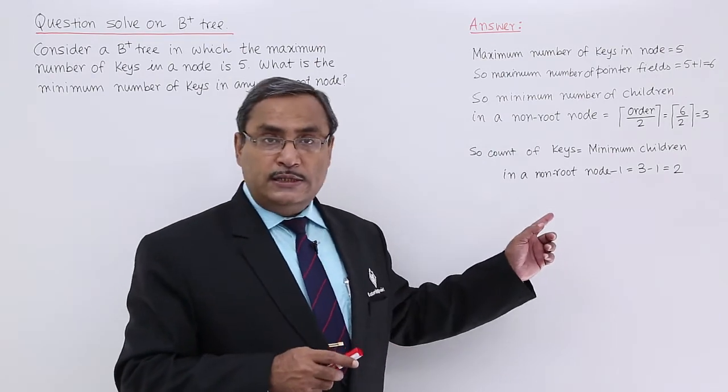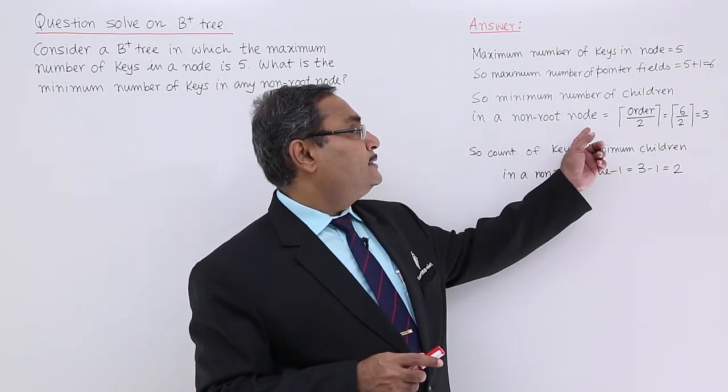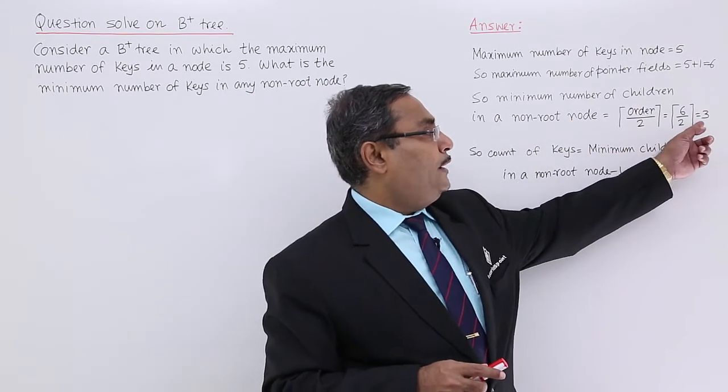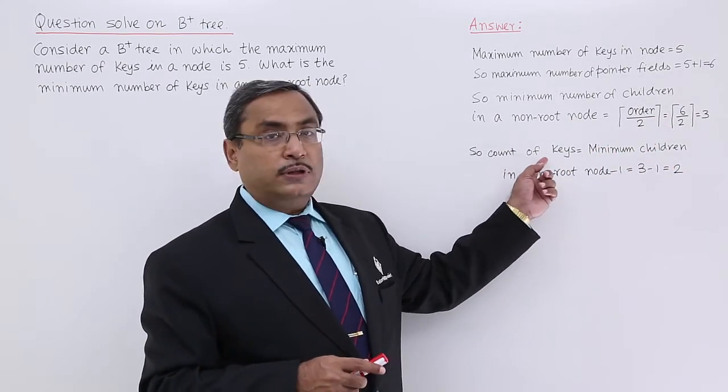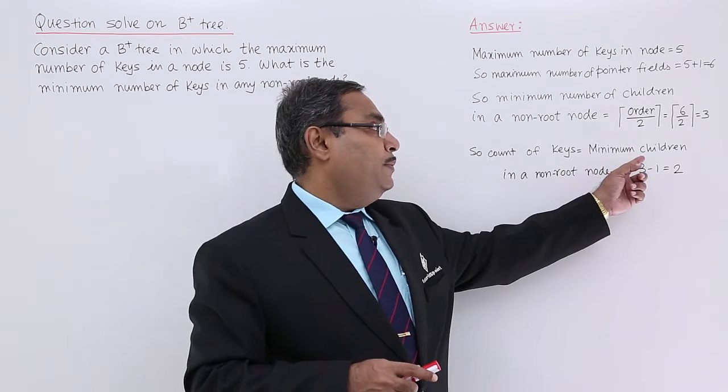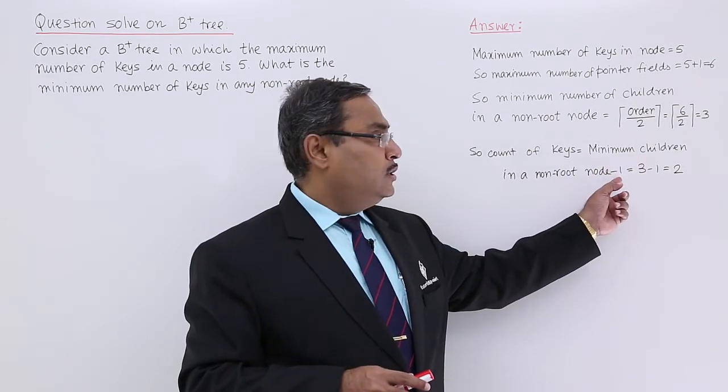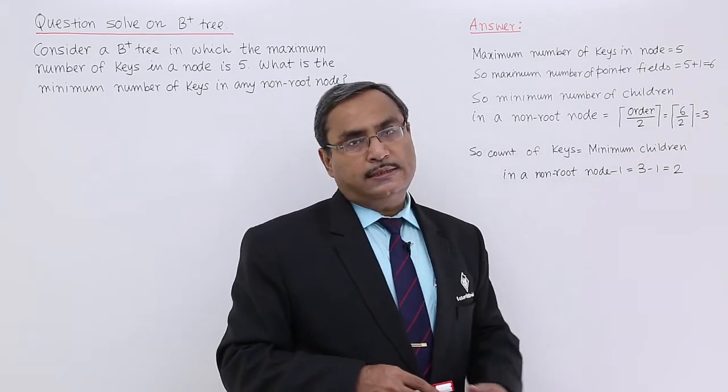Number of keys we can easily calculate. This is the pointer value. They are searching for the number of keys. That will be the pointer value minus 1. So 3 minus 1, 2 will be the answer in this case.